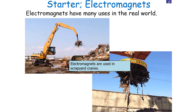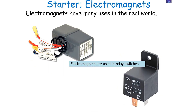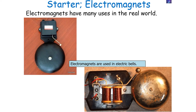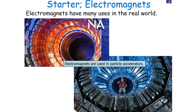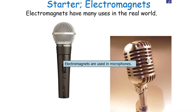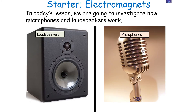Electromagnets have many uses in the real world, such as being used in scrapyard cranes, circuit breakers, relay switches, loudspeakers and headphones. Electromagnets are also used in electric bells, particle accelerators, MRI scanners, microphones, and magnetic levitation trains. In today's lesson, we're going to focus on two particular applications: the microphone and the loudspeaker.